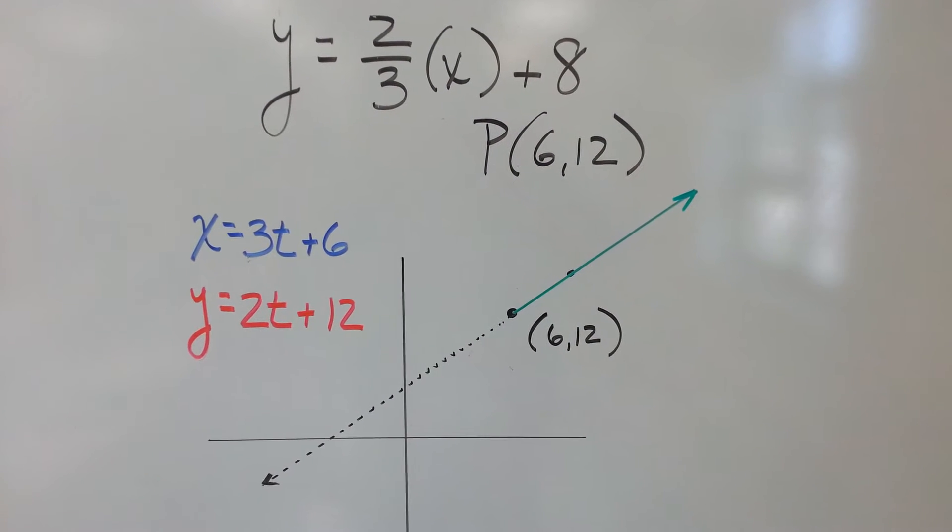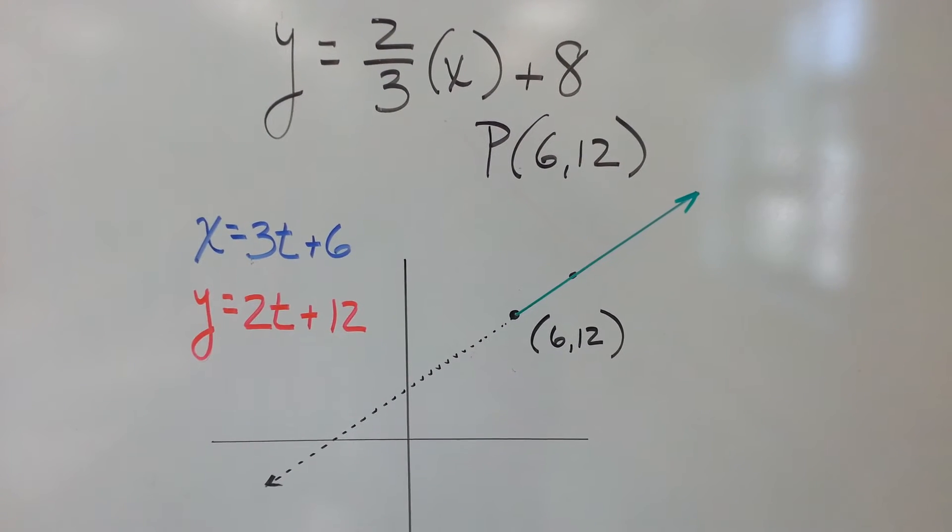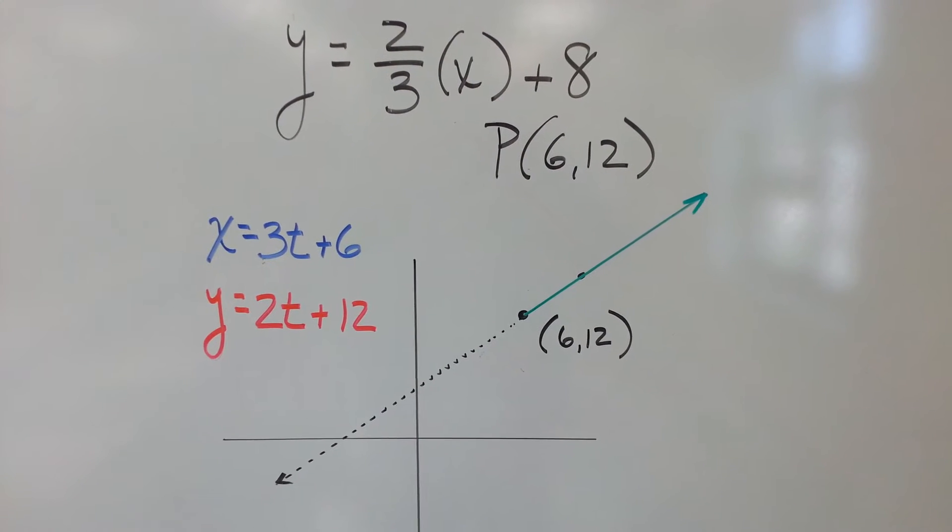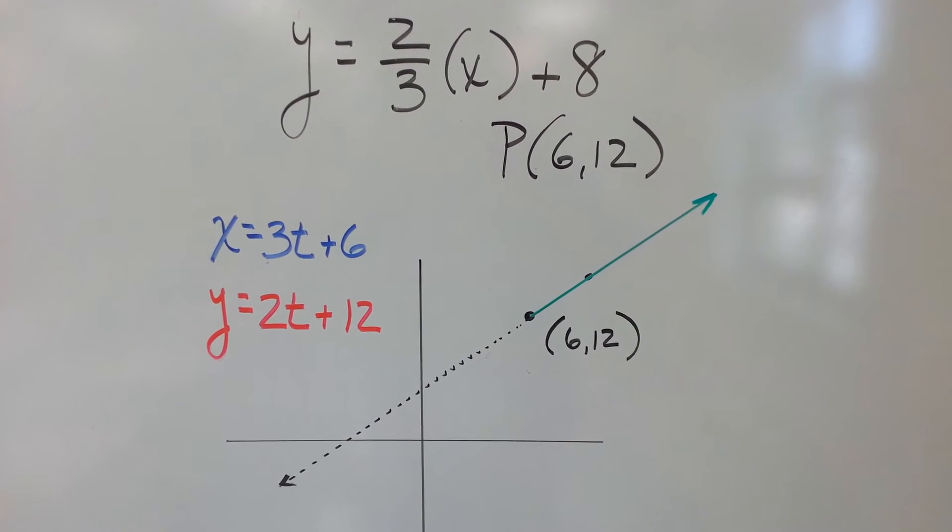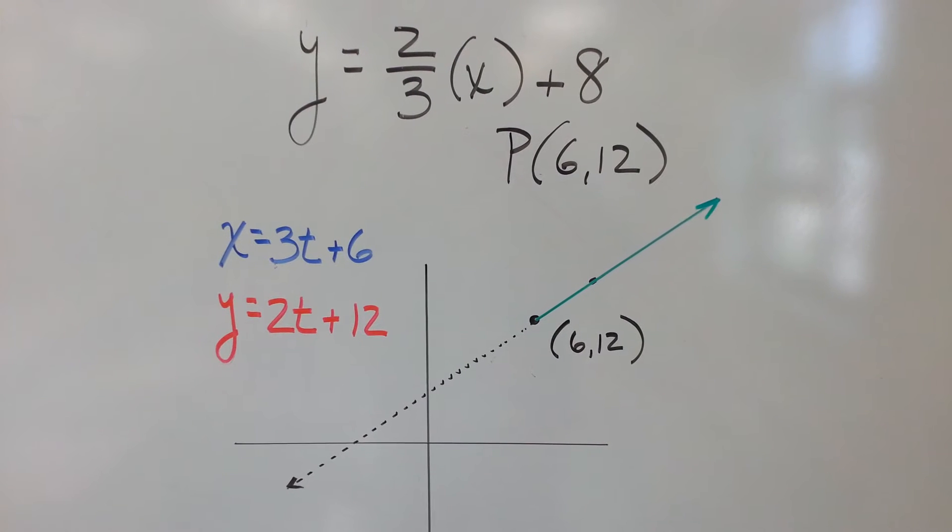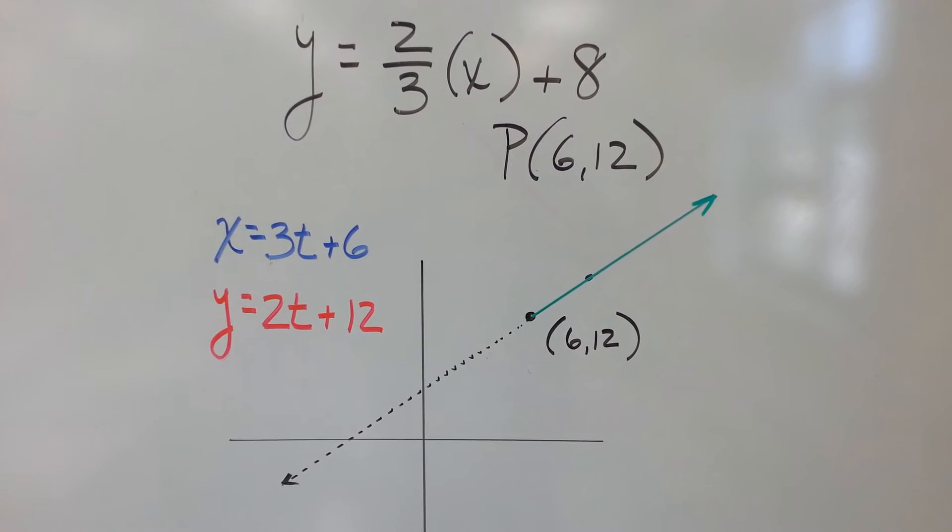Okay, so I've got the point (6,12), I want to know what that line is doing, so here's all you do. You know that the slope on that line goes up 2 over 3, up 2 over 3, you know that, right?